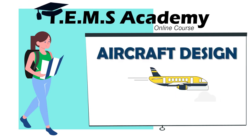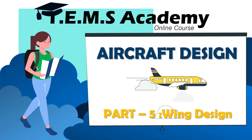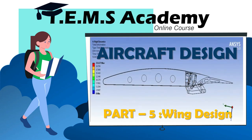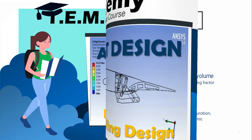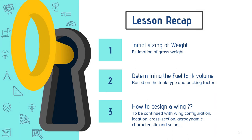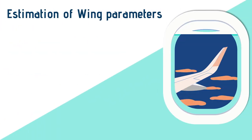Welcome to aircraft design Module 5: Wing Design. Without a wing, an aircraft cannot fly — it is the critical part used for lifting, turning, landing, and controlling the airplane. In the previous module, you learned about the initial sizing of the aircraft's weight and calculating the fuel tank volume. Now in this module, you will learn how to design a wing based on federal and military aviation regulations for various aerodynamic considerations.